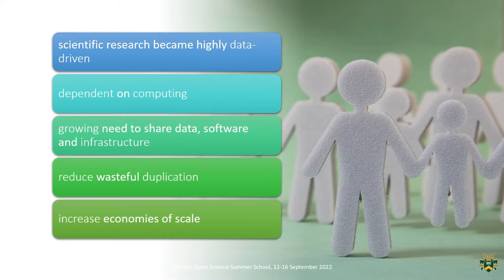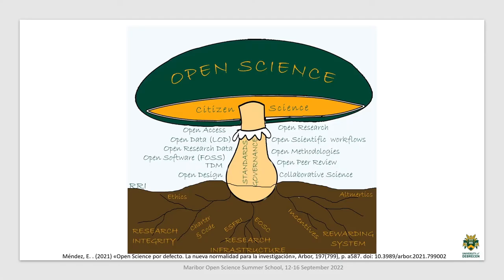We depend on computing, shared data, software, and the growing need for infrastructures. We don't want to have duplicated research, and open science actually helps to improve the economy. Open science is mostly defined with an umbrella term, but I prefer the mushroom, because the mushroom shows its complexity. This mushroom was drawn by Eva Mendez, director of the European Open Science Platform. She drew it because she wanted to show that without proper governance and standards, without the roots, we won't be able to achieve open science practices.